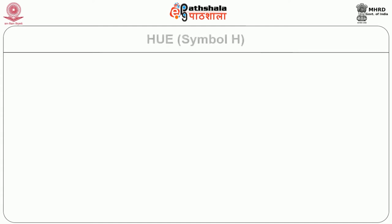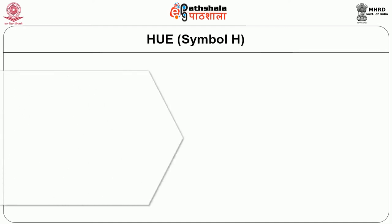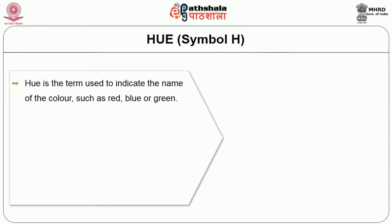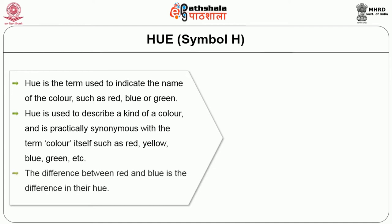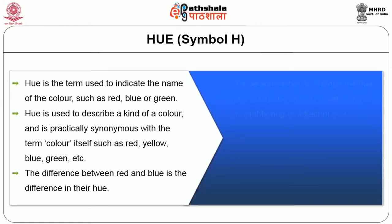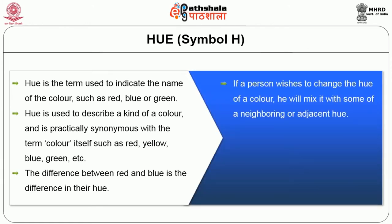The first dimension is hue. The symbol of hue is H. Hue is the term used to indicate the name of the color such as red, blue or green. Hue is used to describe a kind of color and is practically synonymous with the term color itself — such as red, blue, green, yellow, etc. The difference between red and blue is the difference in their hue. If a person wishes to change the hue of a color, he will mix it with some of a neighboring or adjacent hue.